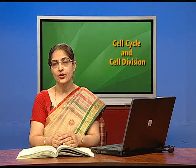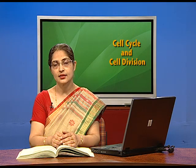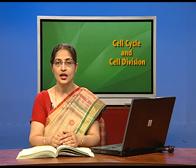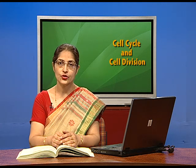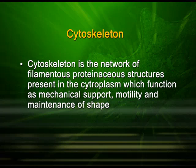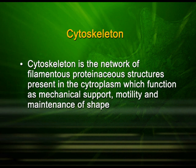The eukaryotic cell also possesses certain cytoskeletal structures: the cilia, flagella, and centrioles. The cytoskeleton is the network of filamentous proteinaceous structures present in the cytoplasm, which function as mechanical support for motility and for maintenance of shape.